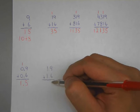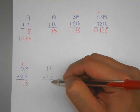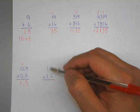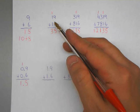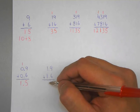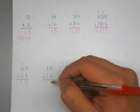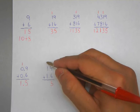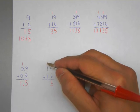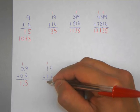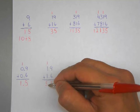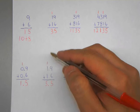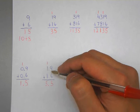What happens with a 2-digit decimal? We have 1.9 plus 1.6 — just like 19 plus 16. Everything goes the exact same way, except we place a decimal point in the answer. 9 plus 6 is 5, we regroup the 1 to the top. 1 plus 1 plus 1 is 3. The only difference is we have a decimal between the 3 and the 5, so the answer is 3.5.